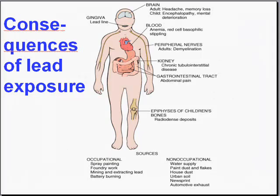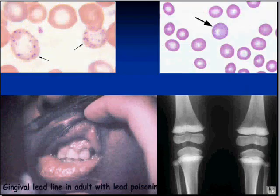A diagram shows the sites of lead's effects: lead lines in the gingiva as a mucosal observation, lead lines as a radiologic finding near the epiphyses of bones in growing children, toxic anemia with red cell stippling in the blood, kidney disease, gastrointestinal tract disease, and central nervous system effects due to lead behaving like calcium and interfering with nerve transmission. We'll look at these observable effects of lead toxicity in the next clip.